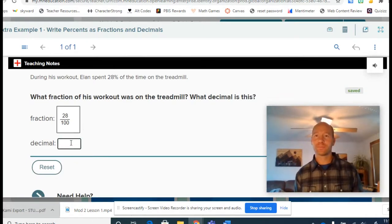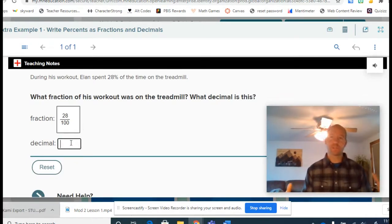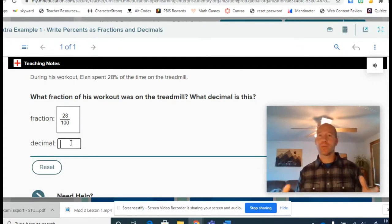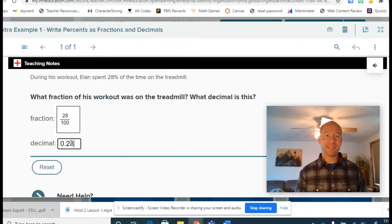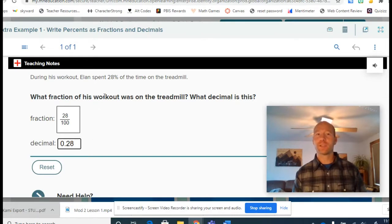How could I write that as a decimal? Well, that decimal, again, we just move the decimal back and we say that 0.28 would be our decimal, the decimal of the workout because 28% is 0.28. Because that would be out of a hundred, the hundred being the one, then 0.28 is the decimal.